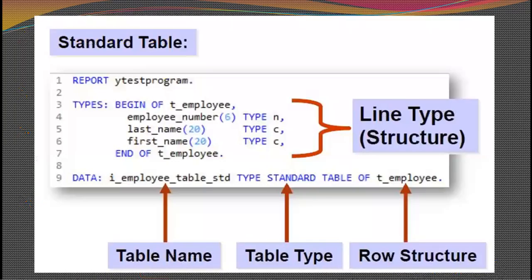This is how a standard code generally looks. You give your code a name — that is what is written in line number one. Then you have a structure that is defined, followed by the name of the table and the table type, and the rule structure that is to be called — the same structure that you created at the top. We'll now go ahead and create a small report.